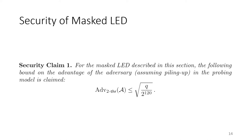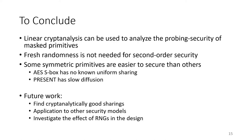Because the s-box is non-linear and the trail passes 24 s-boxes, the distribution of observations from p1 and p2 is close to uniform. This determines the adversary's advantage: we show the advantage of a second order probing adversary on our masked LED is bounded by the square root of the number of queries divided by 2^{120}. An adversary would need 2^{120} probing queries to gain an advantage equal to 1, which we claim is sufficiently low to say the second order masked LED is secure in practice.